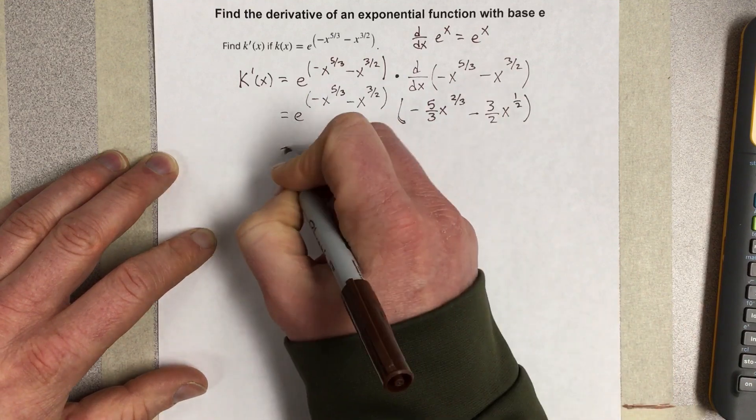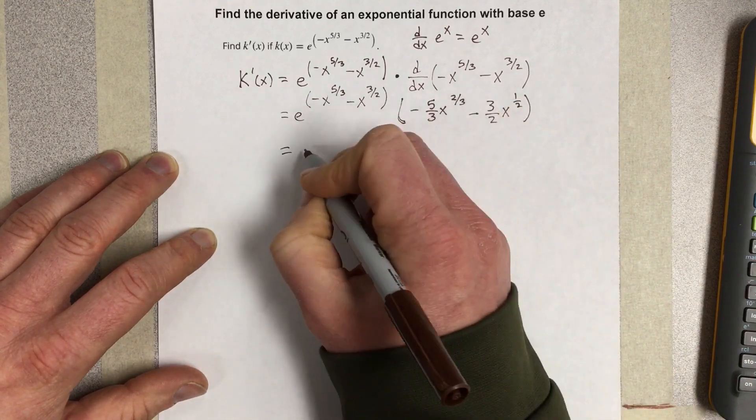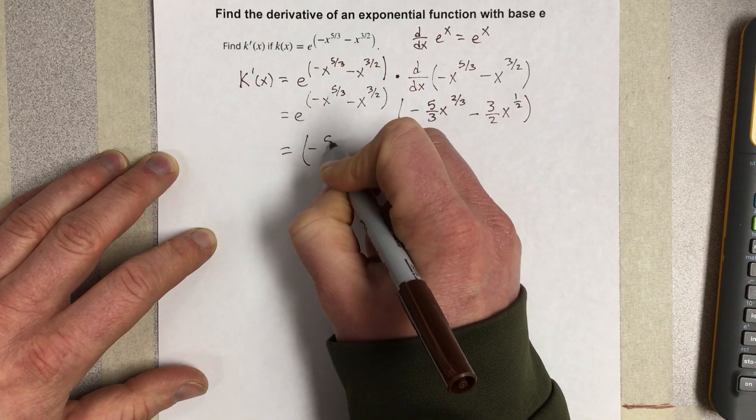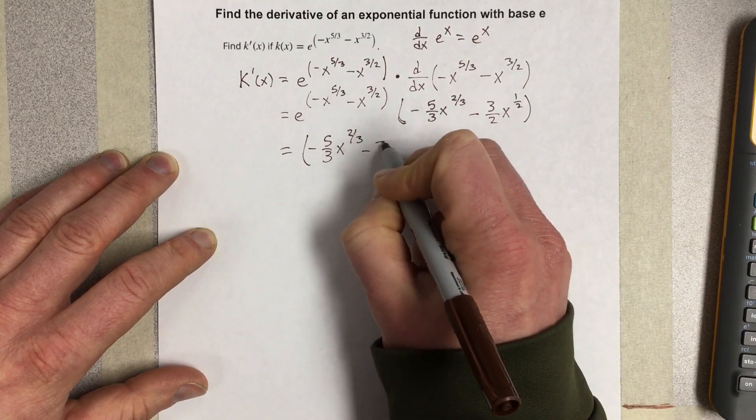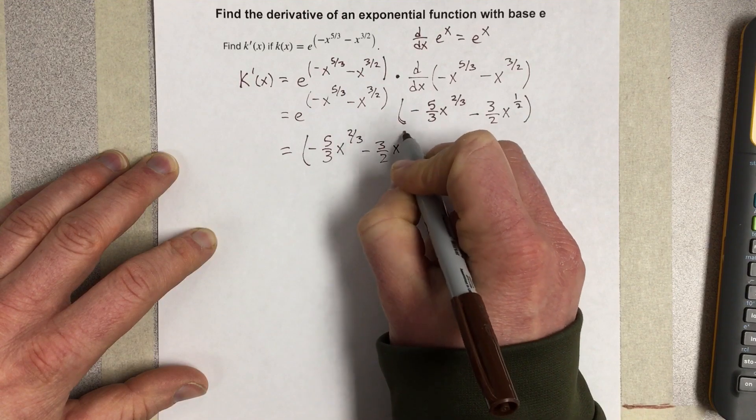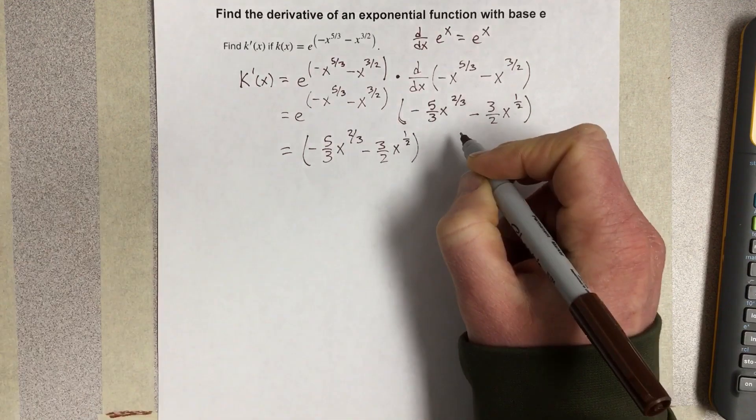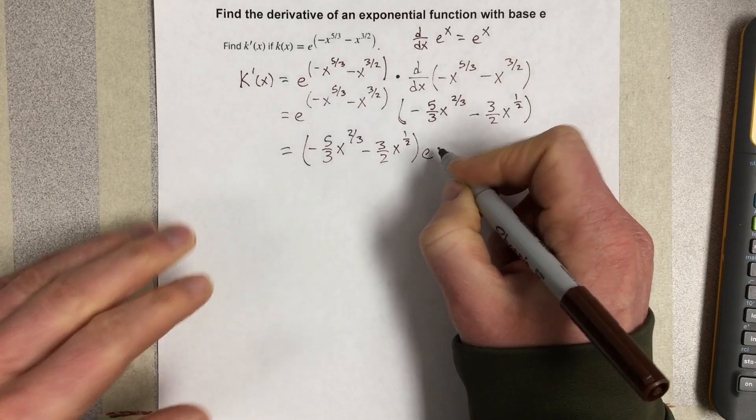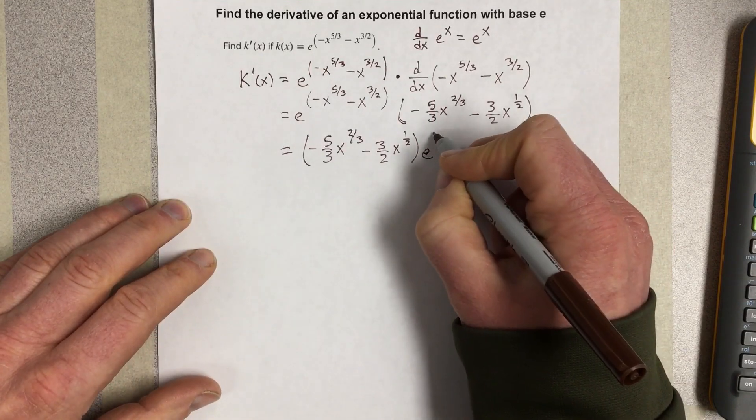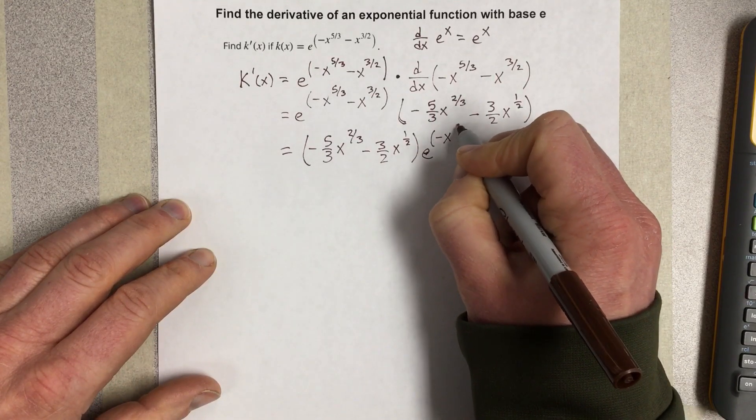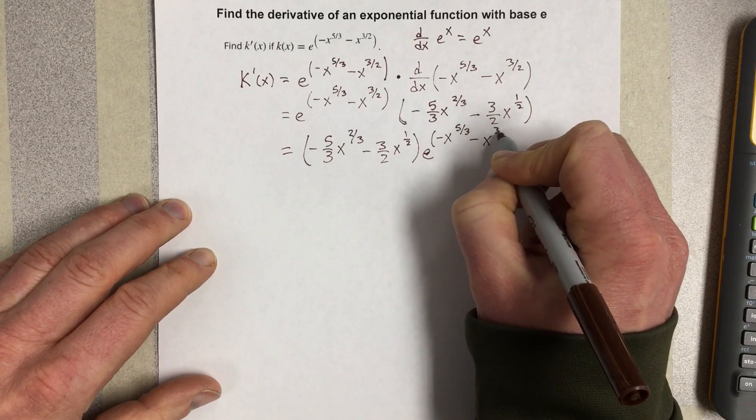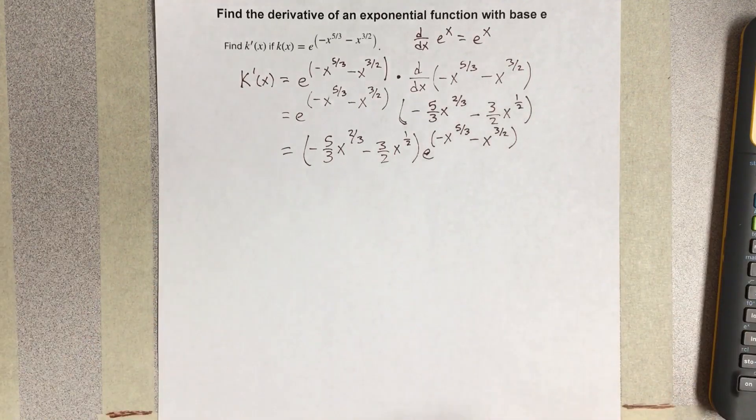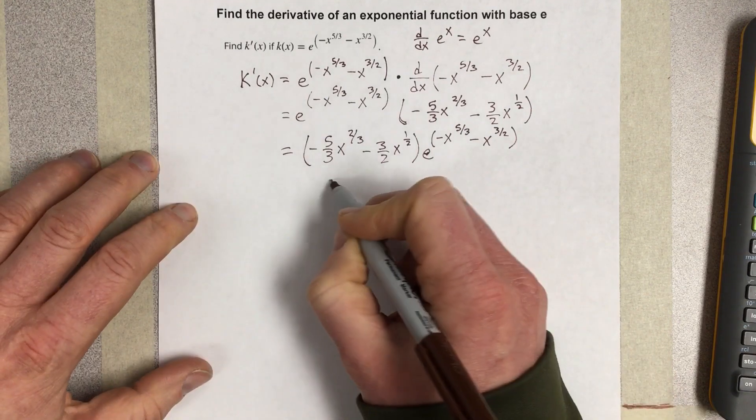So I'd probably rewrite this in front so it would be parenthesis negative 5 thirds x to the 2 thirds minus 3 halves x to the 1 half and then e to the negative x to the 5 thirds minus x to the 3 halves. And that would be the derivative.